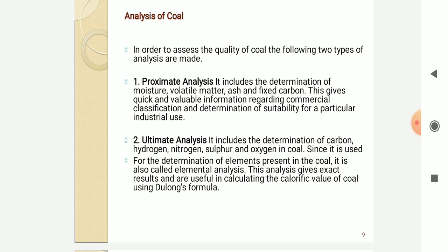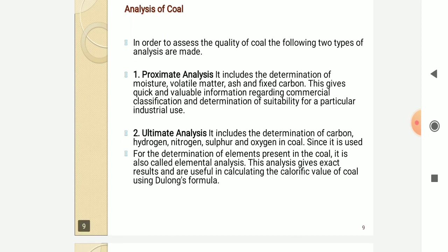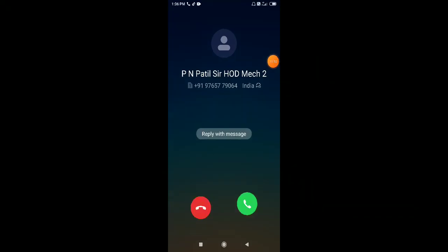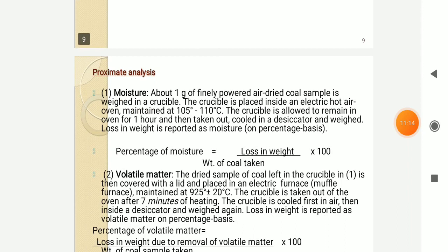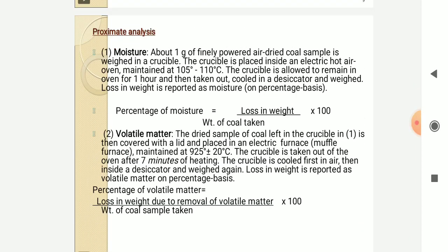Ultimate analysis gives exact results and is useful for calculating calorific value using Dulong's formula. For proximate analysis — moisture: about 1 gram of finely powdered coal sample is weighed in a crucible, placed inside an electric hot air oven maintained at 105 to 110 degrees Celsius, allowed to remain for 1 hour, then taken out. The loss in weight is reported as moisture. For volatile matter: the dried sample of coal in the crucible is covered with a lid, placed on an electric furnace maintained at 925 ± 20 degrees Celsius to determine volatile matter.